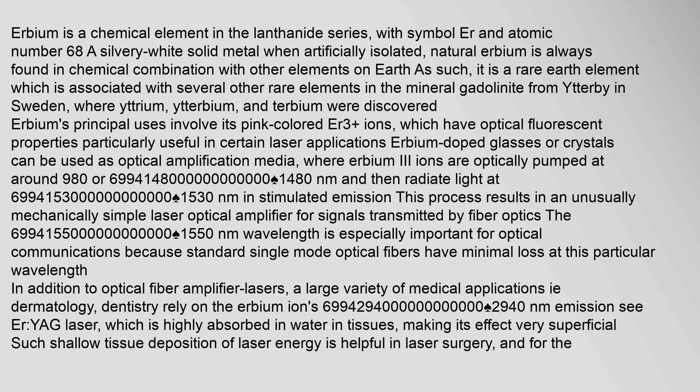Erbium is a chemical element in the lanthanide series, with symbol Er and atomic number 68. A silvery-white solid metal when artificially isolated, natural erbium is always found in chemical combination with other elements on Earth. It is a rare earth element associated with several other rare elements in the mineral gadolinite from Ytterby in Sweden, where yttrium, ytterbium, and terbium were also discovered.